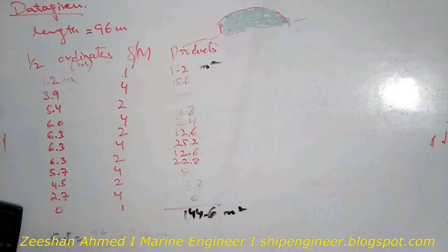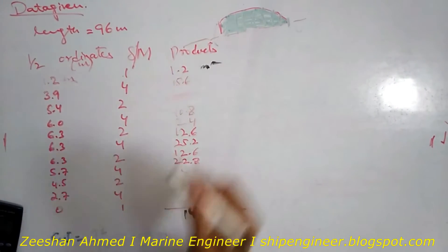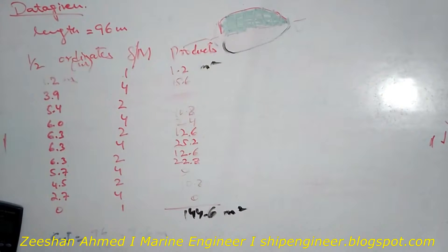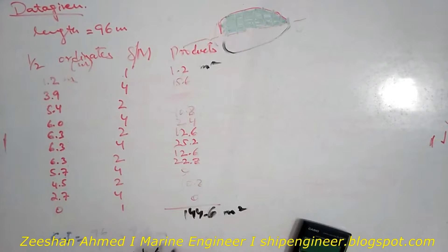Now, 9.6 multiplied by 2 divided by 3, because 2 is because of half ordinates, so for double I have to double it. 2 divided by 3 into 144.6. Let's check: 9.6 times 2 divided by 3 times 144.6 equals 925.4 square meters.